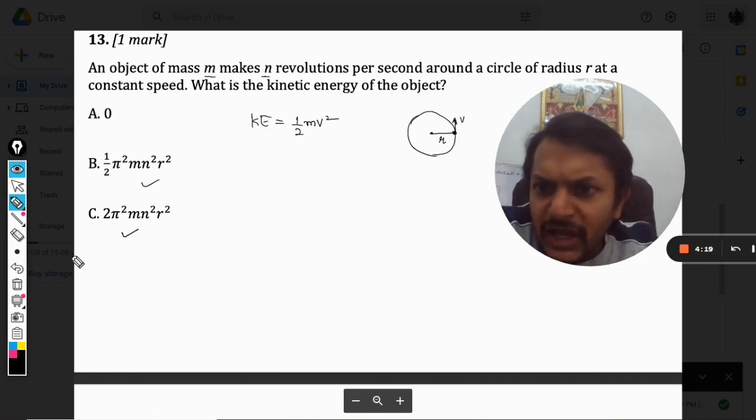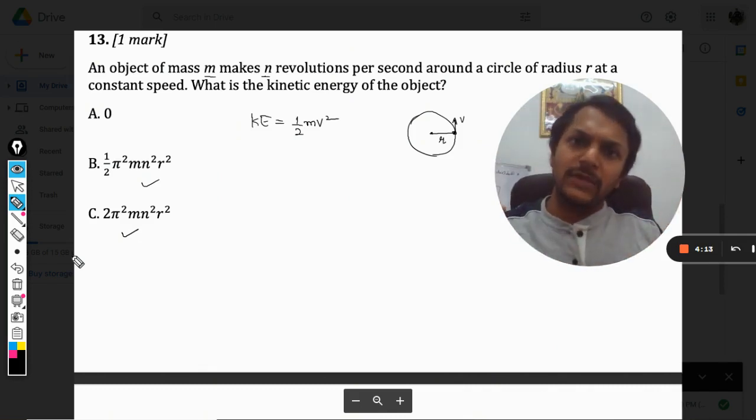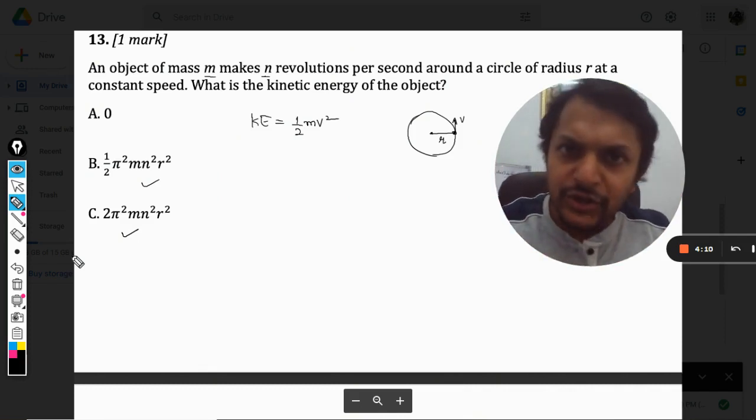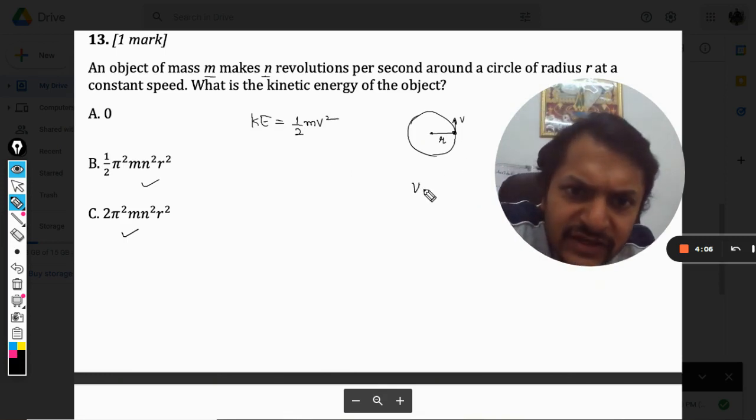The answers have been given in the terms of pi and all that, so it means that we have to convert it into the angular velocities and the rpm, the rotations per minute and all that. So we can say that v is equal to r omega, and omega is the angular velocity that is to be taken here.